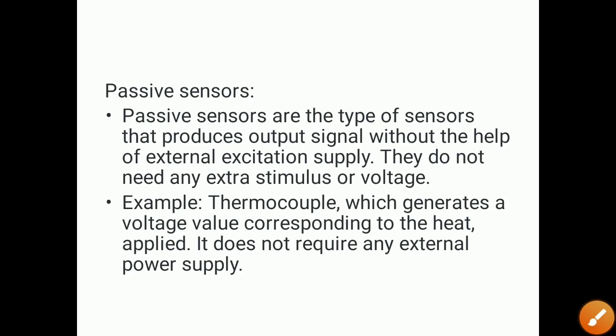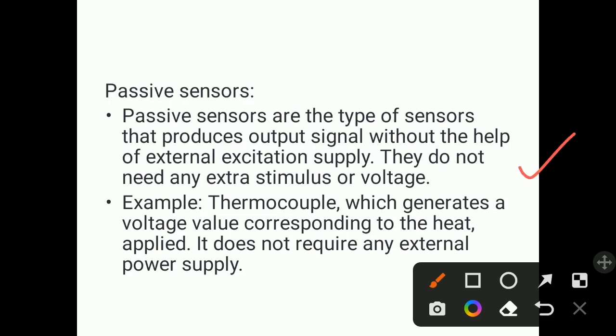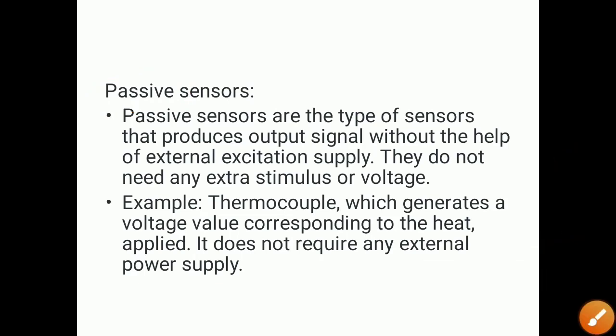Passive sensors are the type of sensors that produce an output signal without the help of external excitation supply — they do not need any extra stimulus or voltage. For example, a thermocouple generates a voltage value corresponding to the heat applied and does not require any external power supply for its working. As temperature changes, it produces voltage. So active sensors require external power supply, but passive sensors do not.